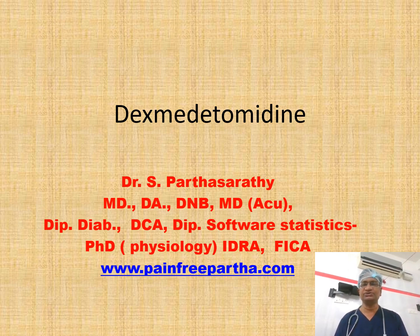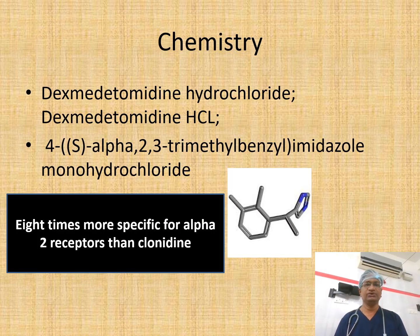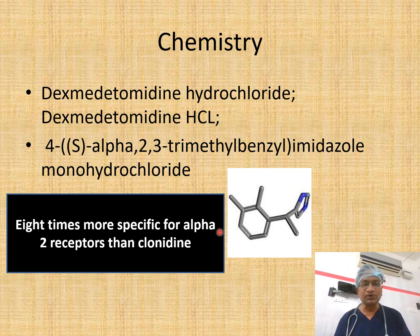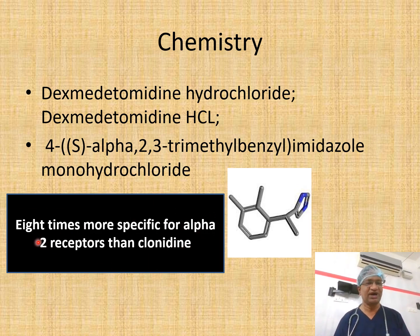Today's topic is about dexmedetomidine. Dexmedetomidine hydrochloride is 4-alpha-2-dimethyl-imidazole — it is basically an imidazole. It is eight times more specific to alpha-2 receptors than clonidine. This specificity for alpha-2 receptors over clonidine by eight times is what we want.